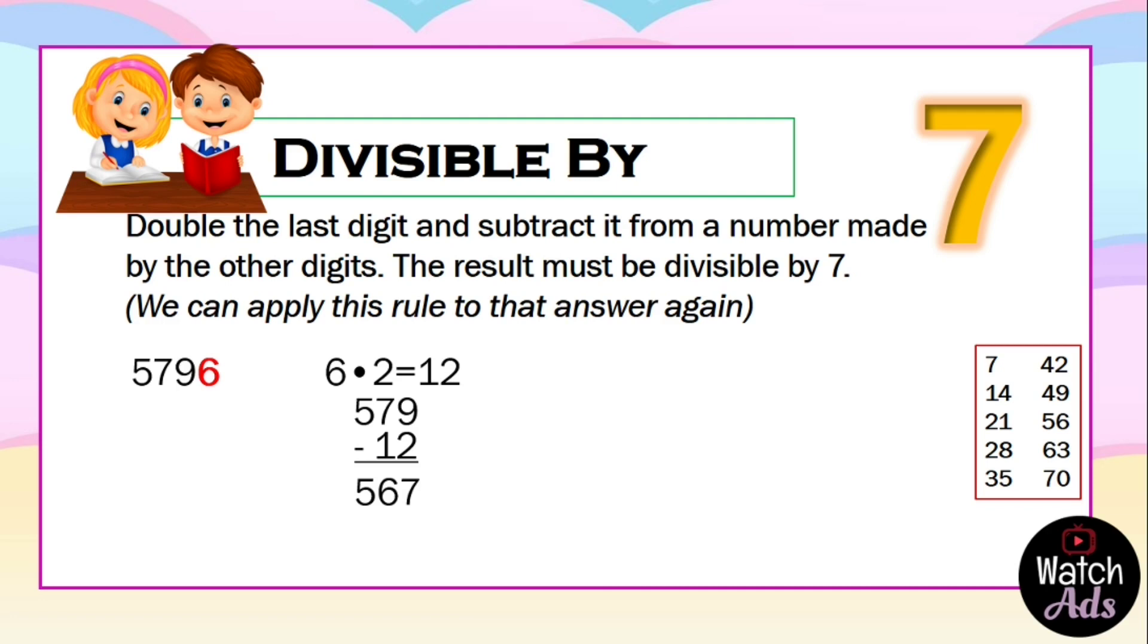Next, the last digit is 7. We double 7. It gives 14. Subtract 14 from 56. The answer is 42.